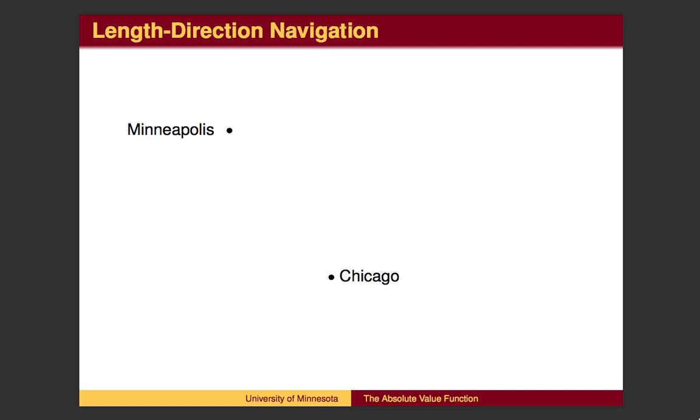In other navigational contexts, traveling from Minneapolis to Chicago for example, we may be given information differently. The first piece of information is the distance. We need to know how far to go. We also need to know the compass heading, that is, we need to know which direction to head.